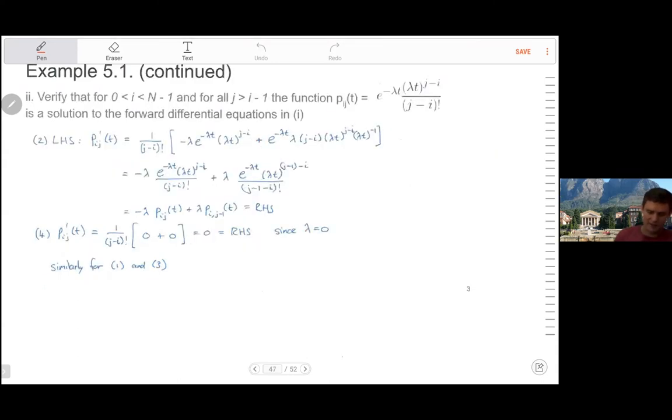Question two says verify that for i between zero and n minus one, and for all j greater than i minus one, the function or the conditional probability is equal to this expression. And you'll recognize that expression as a Poisson distribution, where lambda is equal to lambda t. And the count is j minus i.